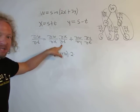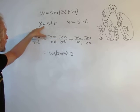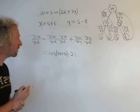And then times del x, del t. So del x, del t is going to be, looks like it's going to be 1. Right. So 1. Plus.